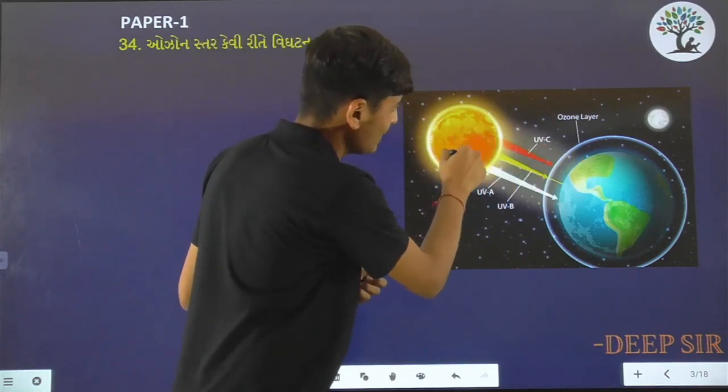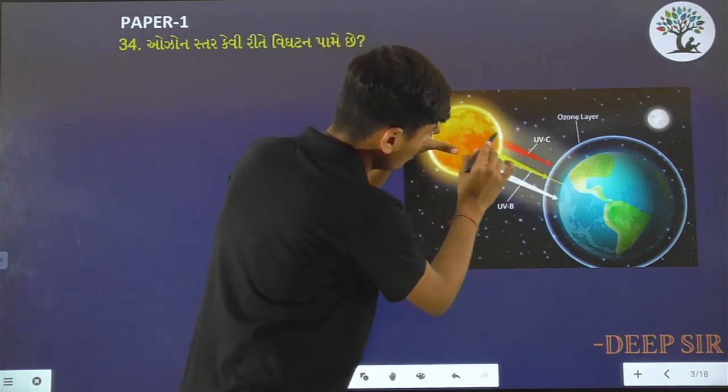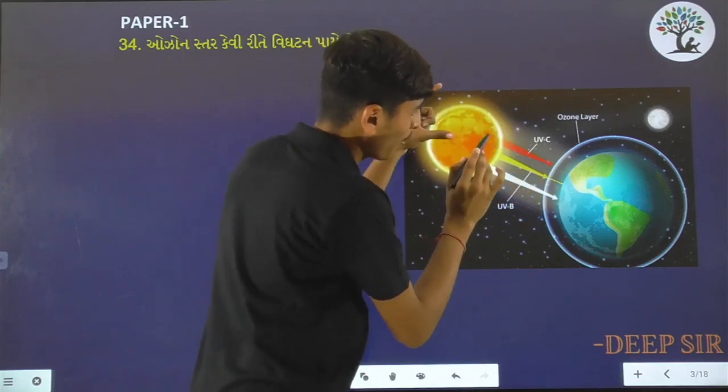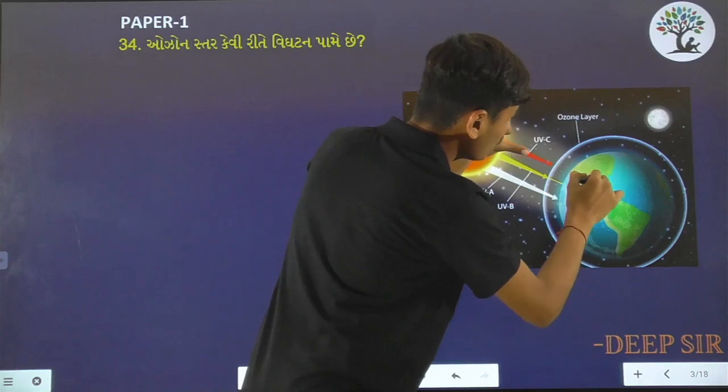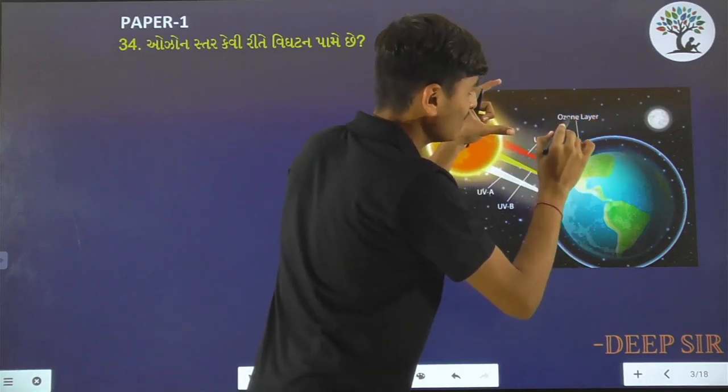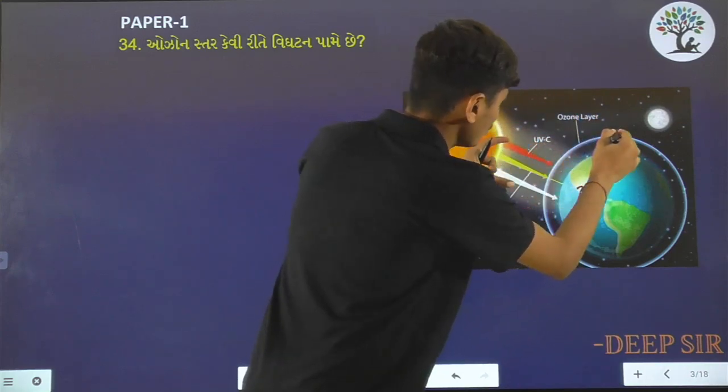This is the Sun, Surya. Surya emits ultraviolet rays. There are different layers. In the stratosphere, there is the ozone layer.